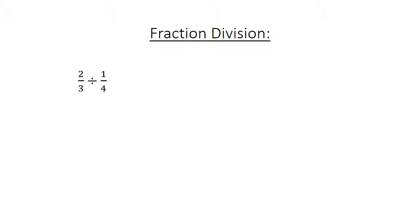Fraction division. Two over three divided by one over four. Two over three times four over one equals eight over three, which equals two and two over three.